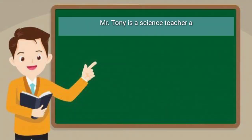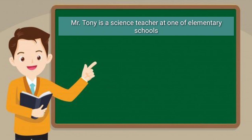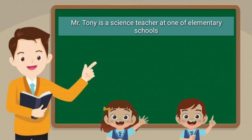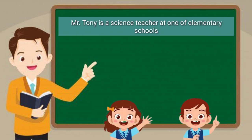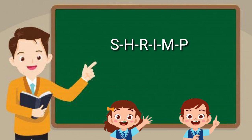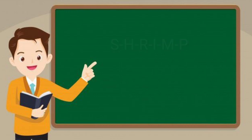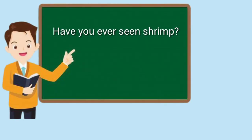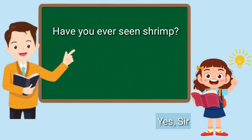Mr. Tony is a science teacher at an elementary school in a remote area. Today he wants to teach his students about shrimp. He started his class with a question: 'Have you ever seen shrimp?' Some of his students screamed loudly: 'Yes, I ate it at a restaurant. My mom put it in my pizza.'